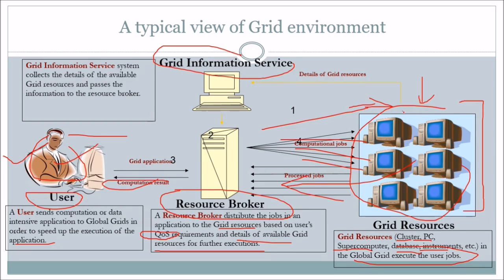In between, there is a grid information service. Details of grid resources are given to the grid information service, which collects details of the local grid resources and passes the information to the resource broker. This is how the resource broker knows which grids are available and which grid is to be allocated to which user, depending upon the quality of service requirement.